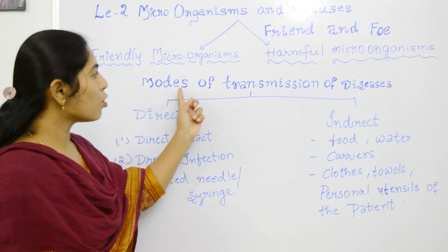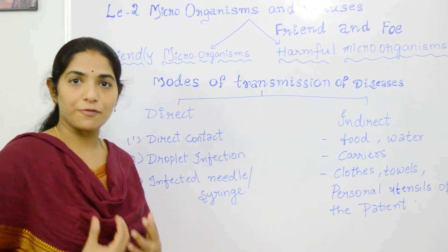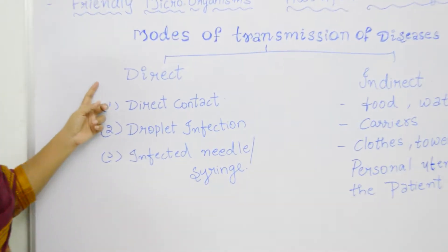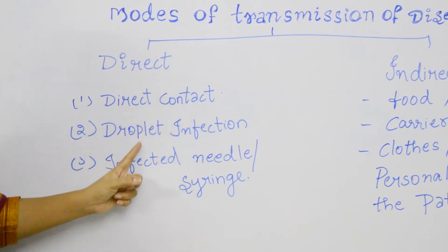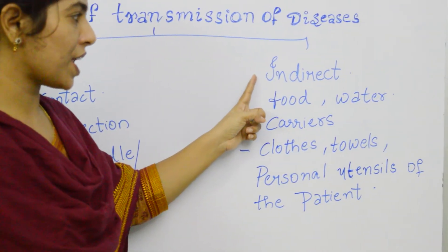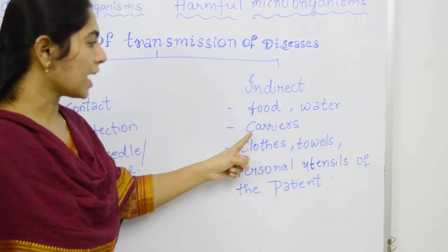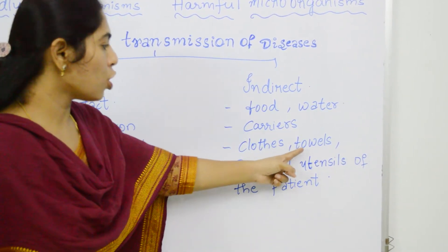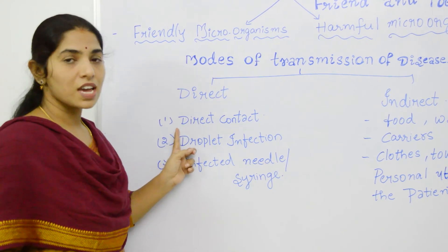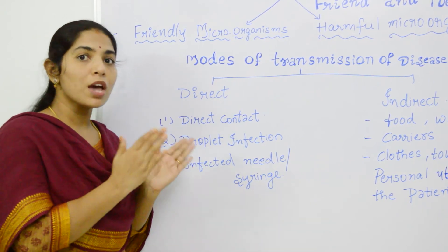Now let us see different modes of transmission of diseases. Pathogens can be transmitted from the source of infection either directly or indirectly. In direct transmission, it can spread through direct contact, droplet infection, or through an infected needle or syringe. In indirect transmission, the organism can spread through food, water, carriers, or the patient's clothes, towels, or personal utensils. Under direct transmission, the first one is direct contact.